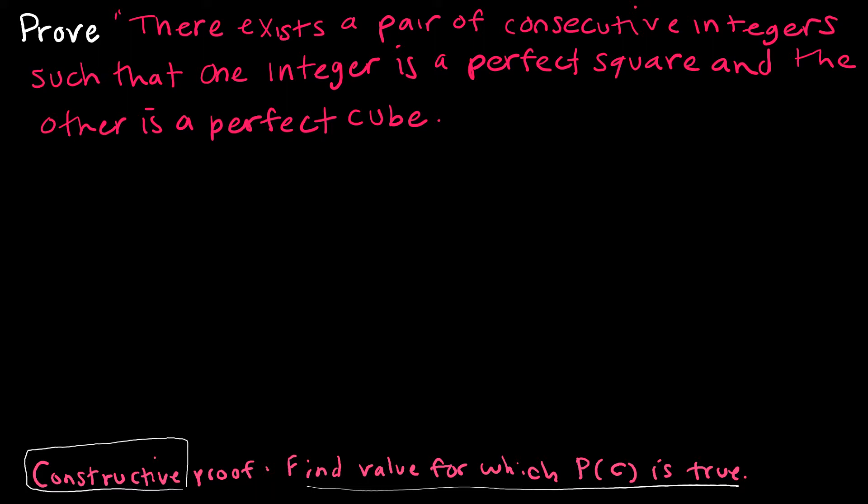The best way to go about this is to really just start looking at perfect squares. Let's make a little table. One, two, three, four, five, six, and hope we don't have to go past that. Now I'm going to look at squares and cubes.